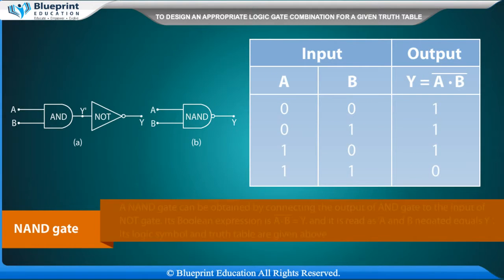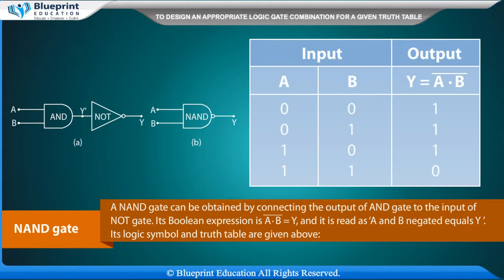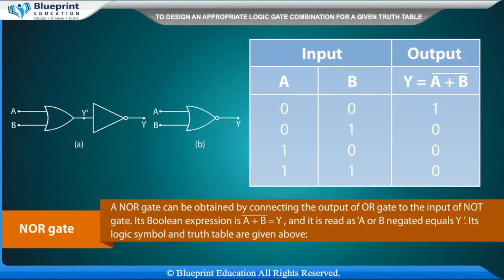A NAND gate can be obtained by connecting the output of an AND gate to the input of a NOT gate. Its boolean expression is A dot B bar equals Y, and it is read as 'A and B negated equals Y'.